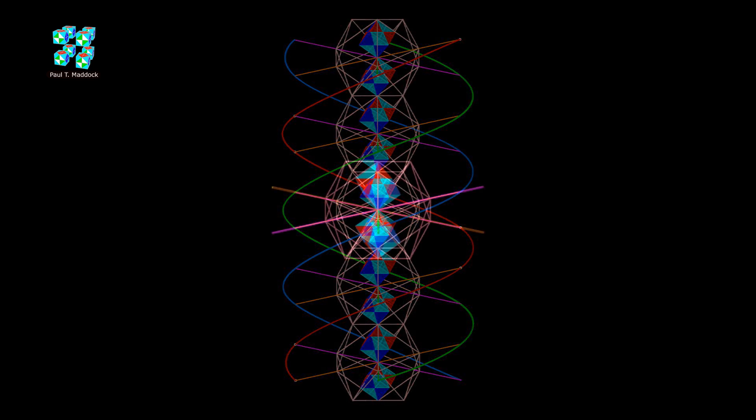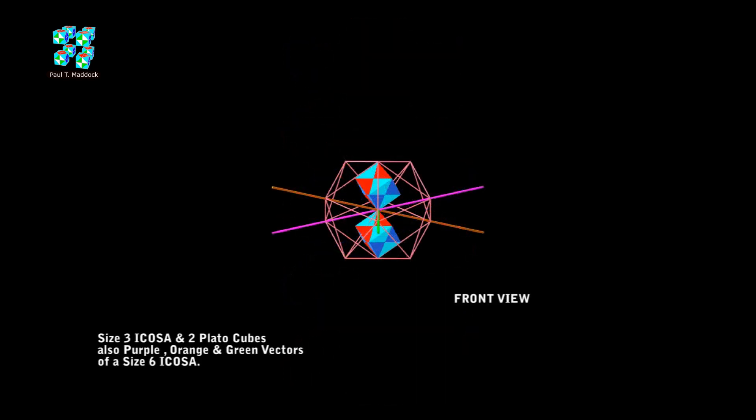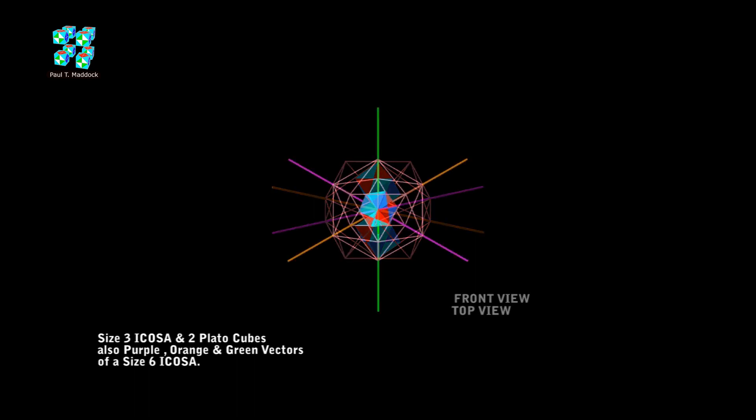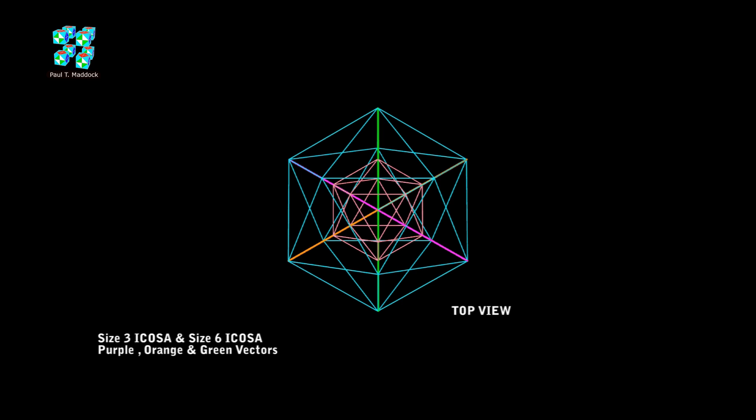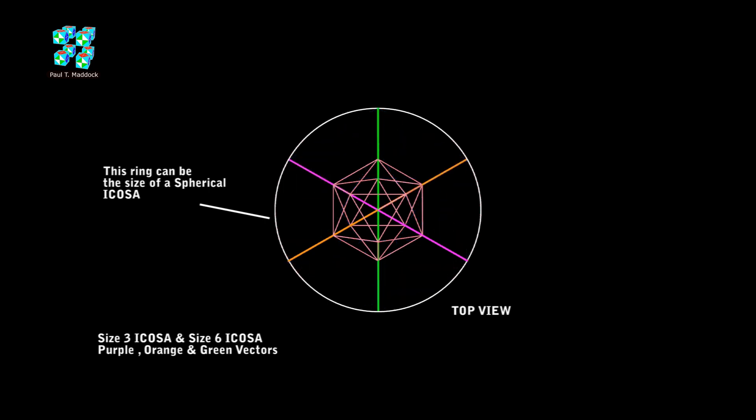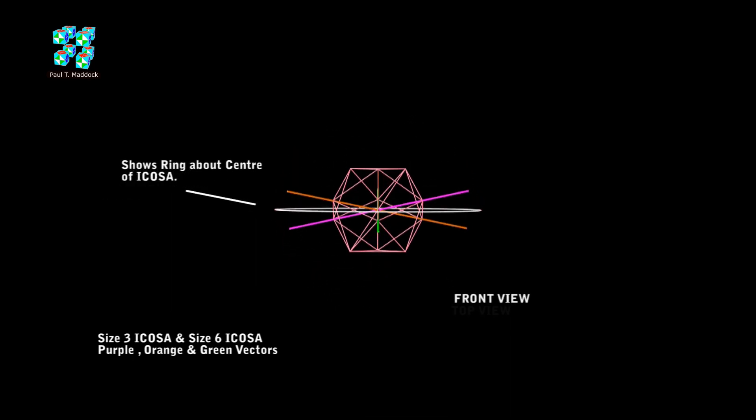So, let's zoom in on just one of the ICOSAs and the vectors. We'll go into the top view, and for this, we can hide the Plato Cubes. Now, I'm going to show a ring that goes around the vectors of the ICOSA. It could be basically a sphere, but I'm showing it as a ring. This ring I show is based around the center point of everything.